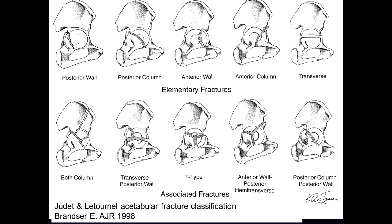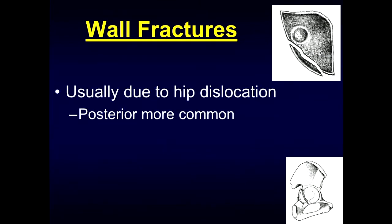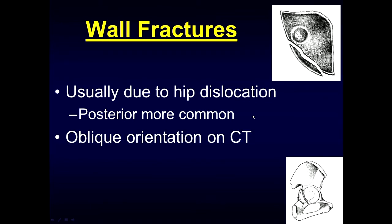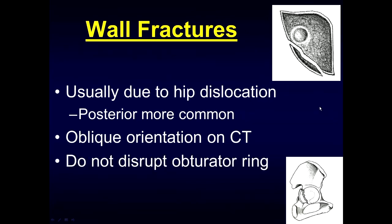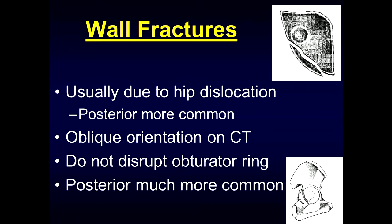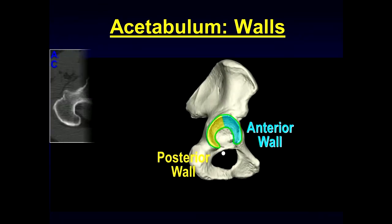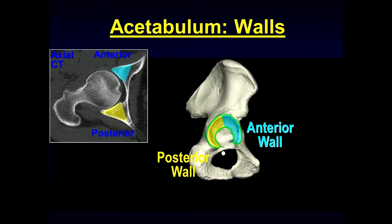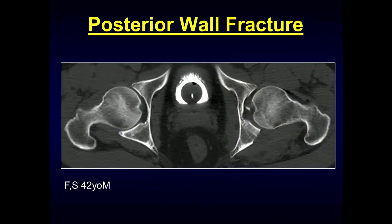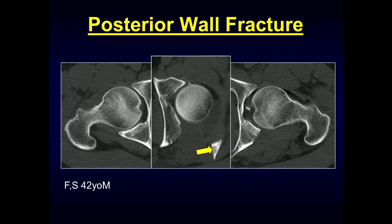Wall fractures are typically due to hip dislocations, with posterior dislocation being the most common. They have an oblique orientation on CT and do not disrupt the obturator ring. Posterior wall fractures are much more commonly encountered. On CT, we have our anterior and posterior walls, and in this individual who had a posterior hip dislocation, we notice the posterior wall is missing. On another acquisition, you can see the triangular shape of that displaced posterior acetabular wall.